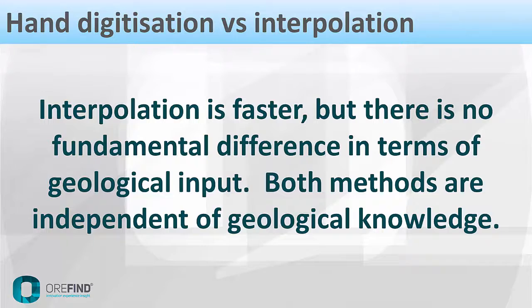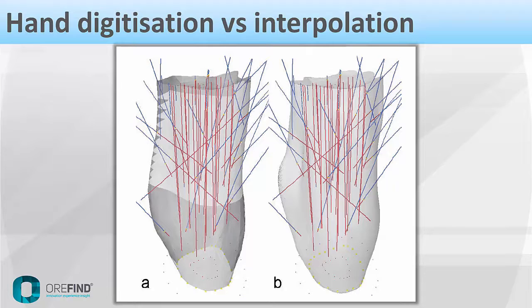I want to explain something between hand digitization versus interpolation. Interpolation is faster, of course, but there is no fundamental difference in terms of geological input in this example. Both methods are independent of geological knowledge. If we take a kimberlite pipe published in 2003, the left-hand side is constructed from a series of polylines digitized in plan and joined to create a 3D model. On the right-hand side is a leapfrog-generated interpolated boundary. The only difference is that the leapfrog model took maybe a minute to generate, whereas the polyline version would have taken quite a few hours. But fundamentally, there is no real difference in the way these two models are constructed — there is really no geological information incorporated into the modeling process.